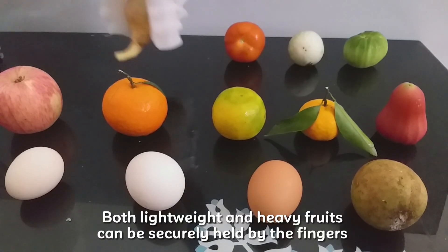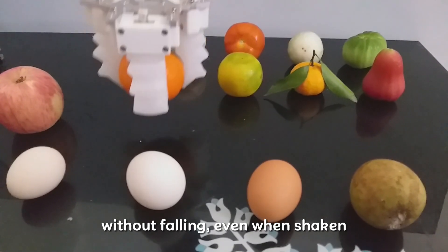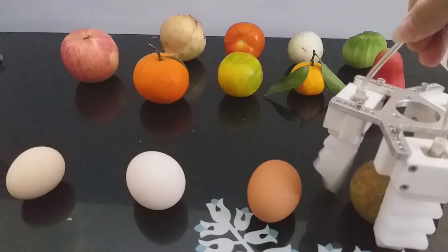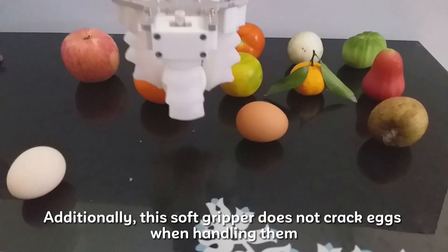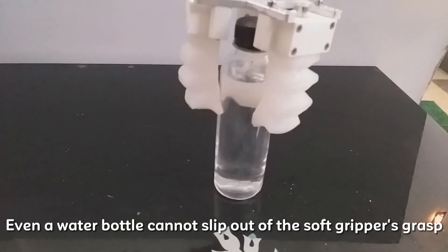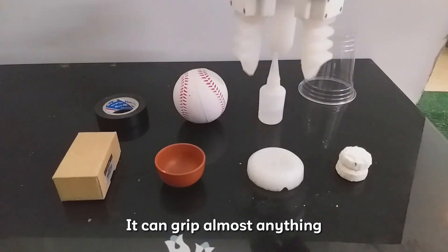Both lightweight and heavy fruits can be securely held by the fingers without falling, even when shaken. Additionally, this soft gripper does not crack eggs when handling them. Even a water bottle cannot slip out of the soft gripper's grasp. It can grip almost anything.